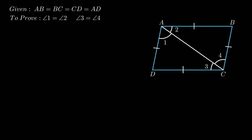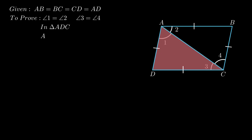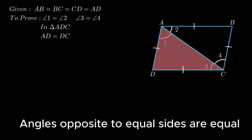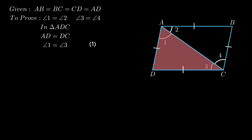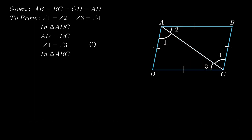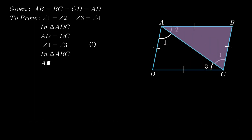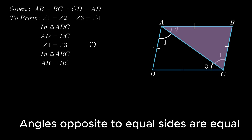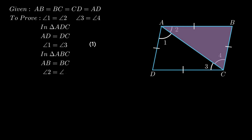Consider triangle ADC: since side AD equals side DC, by the theorem that angles opposite to equal sides are equal, angle 1 equals angle 3. Similarly, in triangle ABC, side AB equals side BC, therefore by the same theorem, angle 2 equals angle 4.